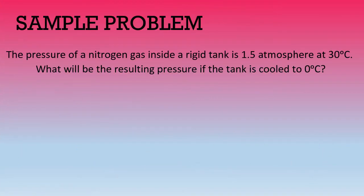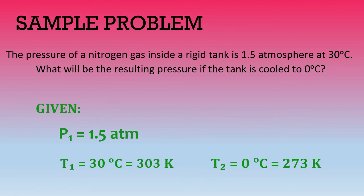Now, going back to the sample problem that we had earlier, we have P1 is equal to 1.5 atm, T1 is 303 Kelvin, P2 is unknown, and T2 is 273 Kelvin.